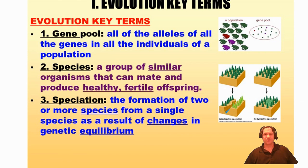The first key term is gene pool. A gene pool is all of the alleles of all the genes in all the individuals of a population. Genes are segments of DNA which code for a particular trait, and alleles are different forms of these genes. For example, in this population of frogs, you can see there are green frogs, purple frogs, and a red frog. Those frogs get their physical characteristics from their genes, and all of those genes are located in the gene pool of that population.